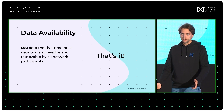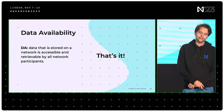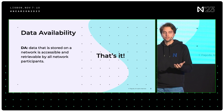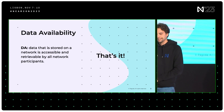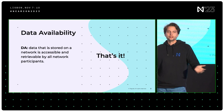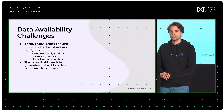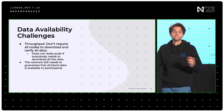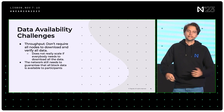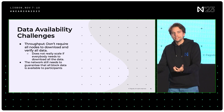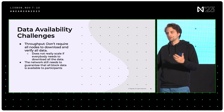What is data availability in the first place? Data availability is a principle that data stored on a network is accessible and retrievable by all network participants. The challenge is when you want to scale the network — you don't want everybody to verify all the data naively. You want some guarantee that data is available to participants, but not make everybody download and verify all the data all the time.